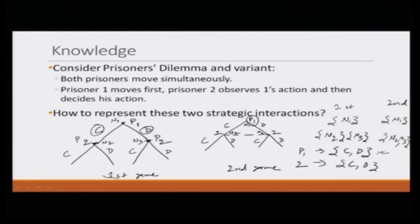But in the extensive form game that we first discussed, let us look at the actions available to player one at node one: those are C and D. For player two at node N2, again C and D, and at node N3 for player two again C and D. If we want to represent it in a compact manner, what are the strategies for player one? Notice that when we talk about strategy, we are trying to describe what is going on in the player's mind even before the strategic interaction has begun. So player one might be thinking that he would either play C or D, and C or D gives a complete plan of action. So C and D are the two strategies for player one.